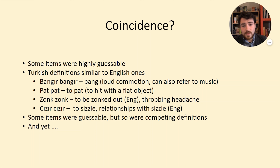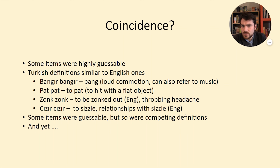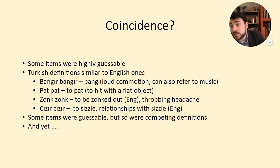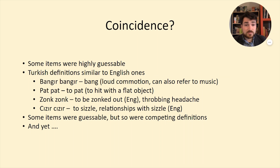Is it coincidence? The top four items — bonger bonger, pat pat, zonk zonk, jizzur jizzur — all have relationships with English words: bang, pat, to be zonked out, and to sizzle, respectively. The 'zonked out' one I'm less sure about — perhaps less common — but the others are very common English words remarkably similar to their Turkish counterparts. So is that systematicity? English and Turkish are not related languages. Is it iconicity? Perhaps the same underlying iconic properties generated words in both languages independently, or it could just be coincidence through the systematicity of the respective languages.